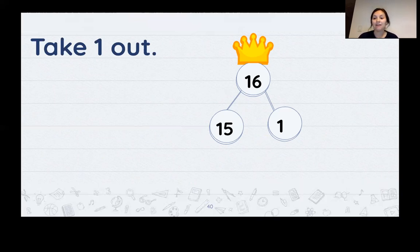Take one out of eleven. Ten and one make eleven. Nice. Take one out of fifteen. Fourteen plus one makes fifteen. Nice. Take one out of five. Four plus one makes five. Nice. Last one. Take one out of three. Two and one make three. Nice job.